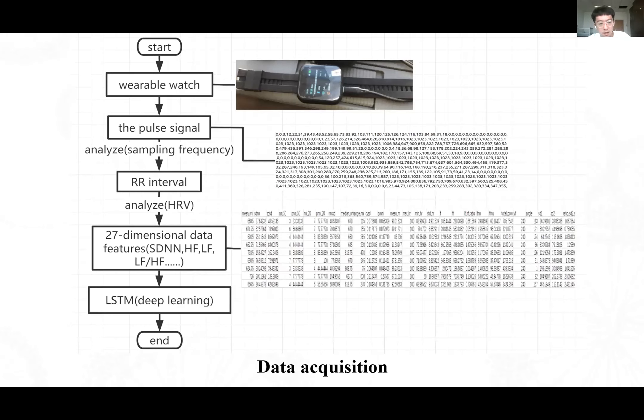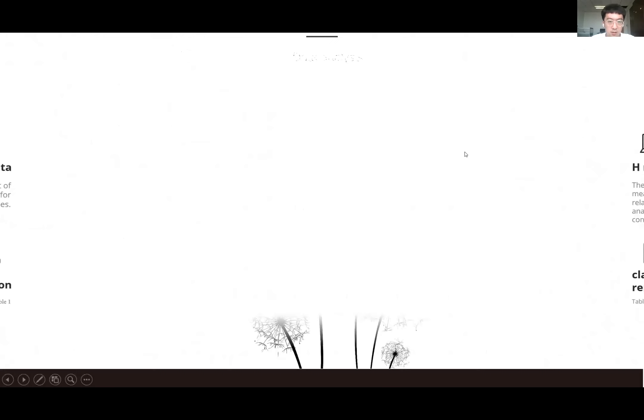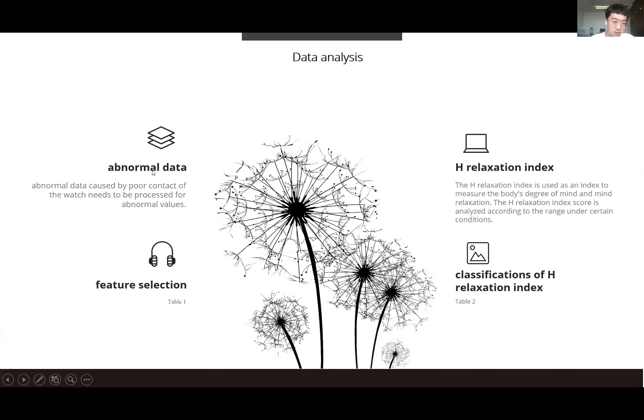We send this data to the LSTM neural network for deep learning. And this is our data analysis. First, there are some abnormal data that exists, such as the shaking and instability of network signals. So we must process abnormal values. The feature selection I will show on table one, the classifications of H-relaxation index I will show on table two.